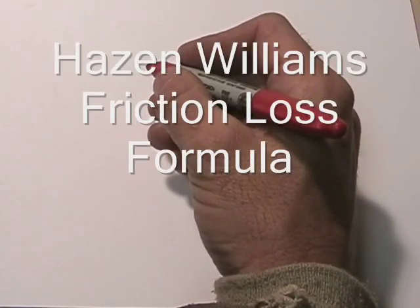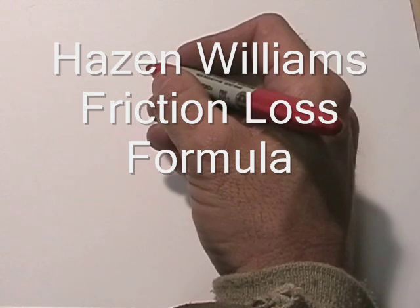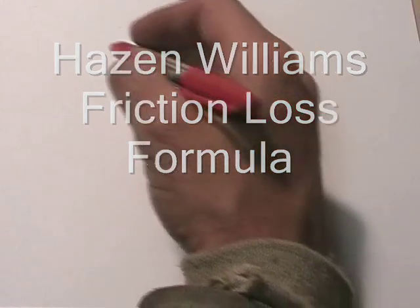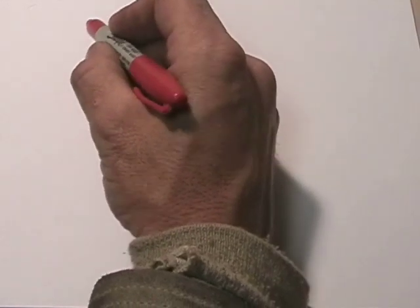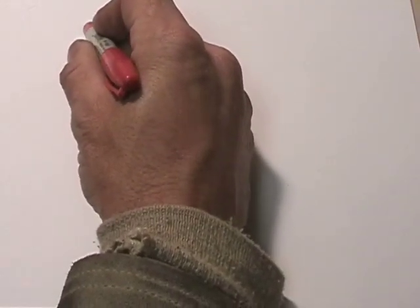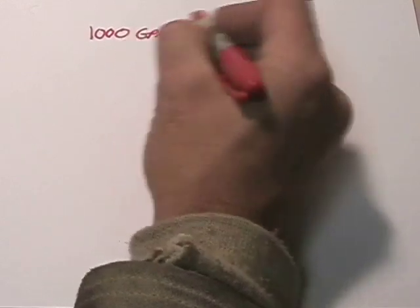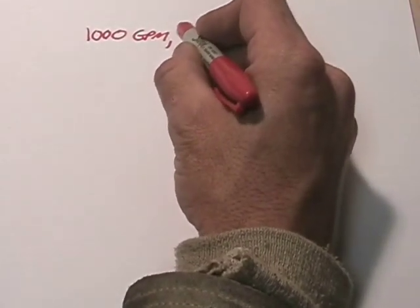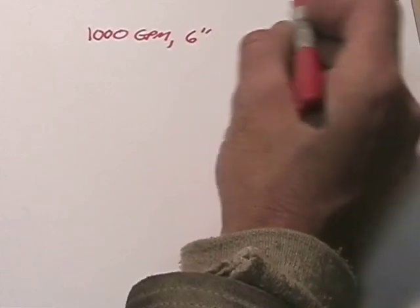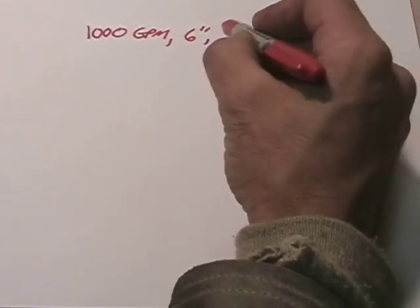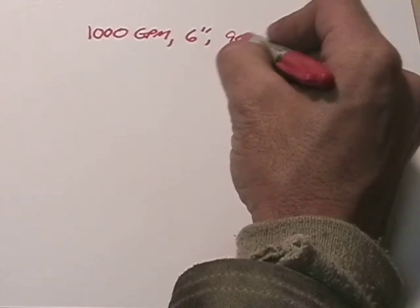This calculation will explain the Hazen-Williams formula for calculating friction loss. Usually they'll give you a water main and tell you you're flowing, let's say, 1,000 gallons per minute. They'll also tell you the pipe size and diameter of the interior, and then finally give you the C factor of the pipe, which is the roughness or smoothness of the specific pipe.